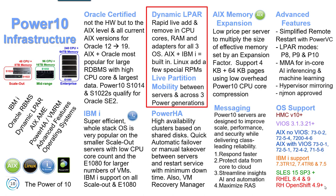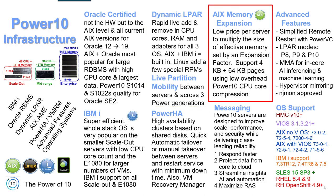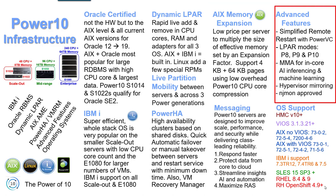Once configured, you also have Live Partition Mobility — using Virtual IO Server technology, you can migrate a virtual machine between servers across three generations of server. With AIX we have memory expansion, which compresses memory in the computer to give you more effective memory — helpful when buying terabytes of memory at current prices. Advanced features include simplified remote restart with PowerVC: if a virtual machine fails, you can rebuild the logical partition on a different machine and restart it. A particular LPAR can run in three modes on Power 10: Power 8 mode, Power 9 mode, or native Power 10 mode. MMA enables in-core AIX inferencing and machine learning on the same machine as your main data.